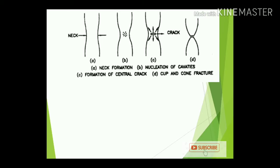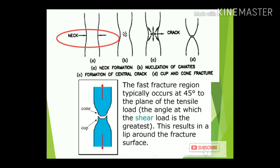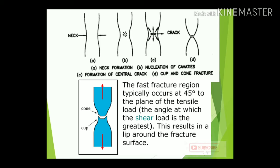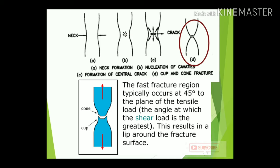Looking at the different steps of failure of ductile materials: in Figure A, there is elongation — increasing length and decreasing diameter. The area where the diameter decreases is called necking. Step one is necking due to applied tensile force. Step B shows nucleation of cavities — if defects are present in the material, at the necking area all cavities come together and collapse into cracks.